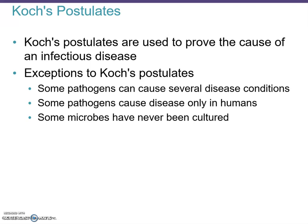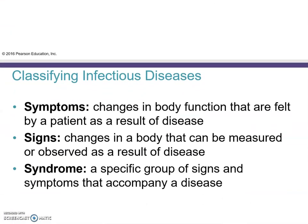Exceptions to Koch's postulates include: some pathogens can cause several different disease conditions — as we see with COVID-19, where some people get very sick or die while others have mild or no symptoms. Some pathogens can only cause disease in humans, so a dog won't catch the flu from you. Coronaviruses are notable for jumping species barriers, but that is not the norm. Finally, some microbes simply cannot be cultured, so Koch's postulates cannot be applied.